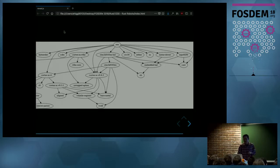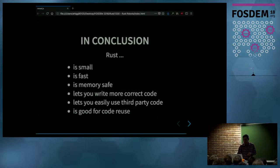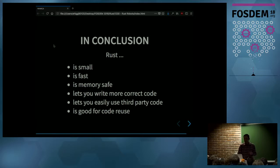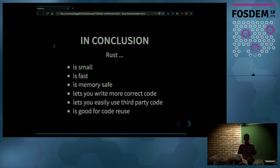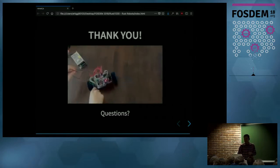In conclusion: Rust is small enough to fit in a microcontroller, and performant enough to implement time-sensitive control systems on resource-constrained devices. It's memory-safe — you can do multitasking without worrying about data races. It lets you write more correct code, as shown in the pin configuration API where misconfiguration is prevented at compile time. It makes it easy to use third-party code, as demonstrated in the communication module. And it enables code reuse through generic drivers that work across many platforms.